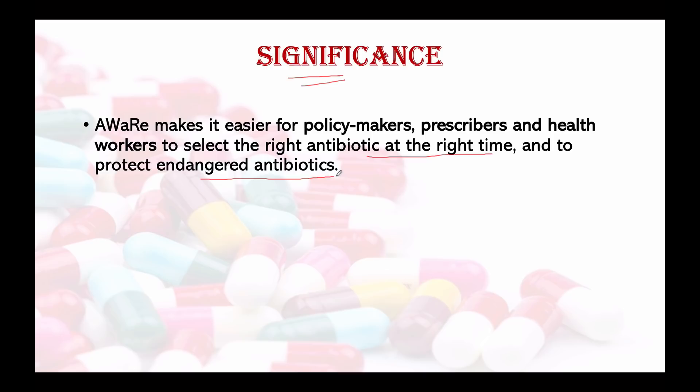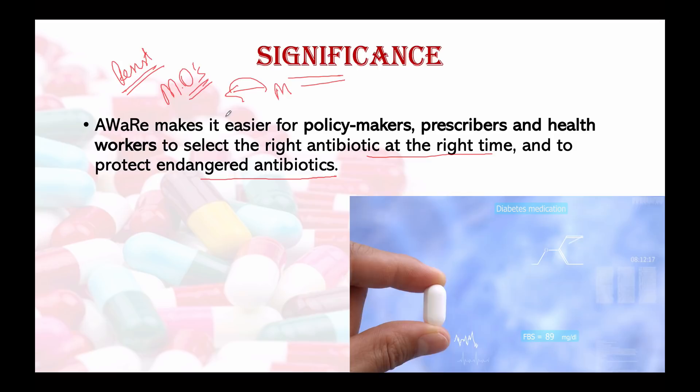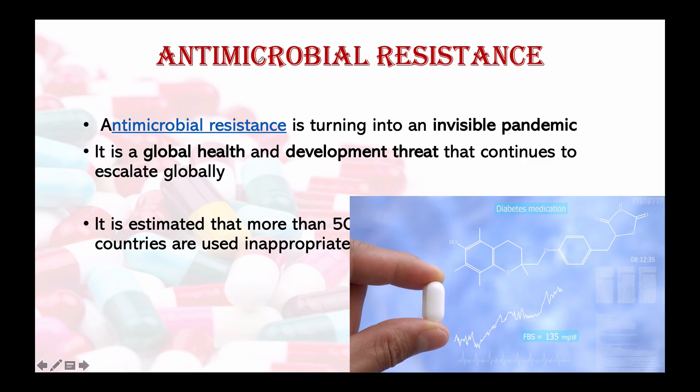By classifying antibiotics into three distinct groups and advising when to use them, AWaRe makes it easier for policy makers, prescribers, and health workers to select the right antibiotic at the right time. This protects endangered antibiotics and also helps prevent antimicrobial resistance — a resistance built not by humans but by microorganisms, meaning medicines have no effect once microorganisms build that resistance.